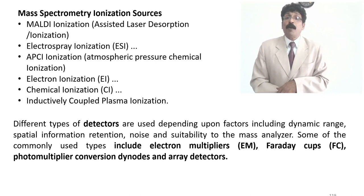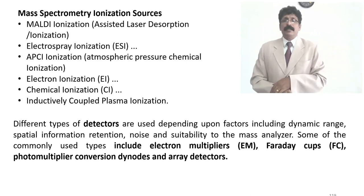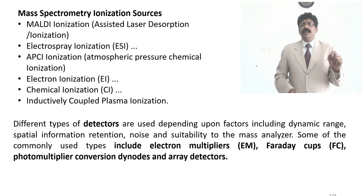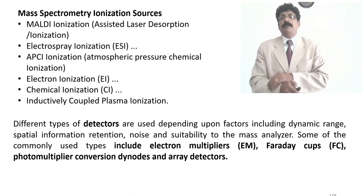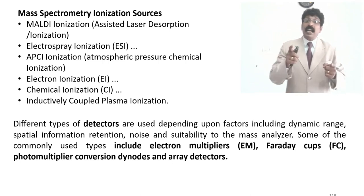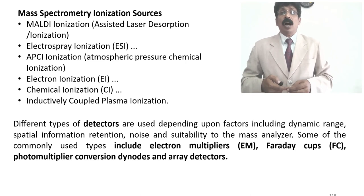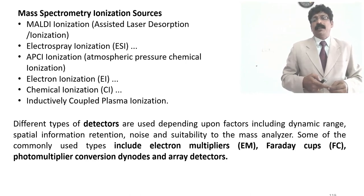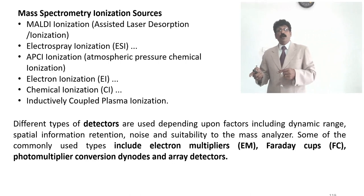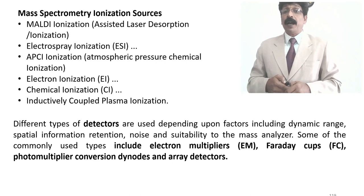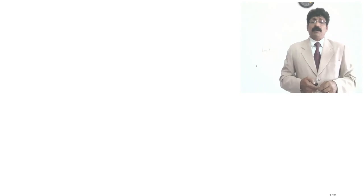Different types of detectors are used depending on factors including dynamic range, spectral information, retention, noise, and suitability to the mass analyzer. Commonly used detectors include electron multipliers — which amplify and multiply the ions to produce a measurable current impulse identifying the mass number — as well as Faraday cups, photomultiplier conversion, and diode array detectors. These amplify and identify the mass of the compound clearly.